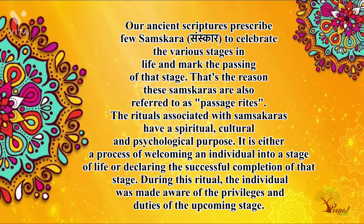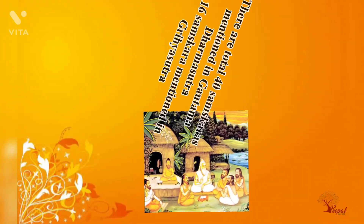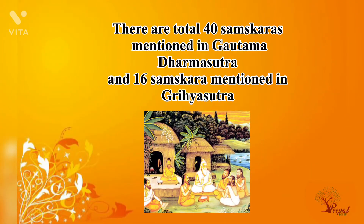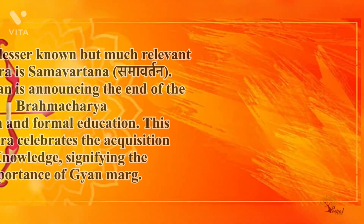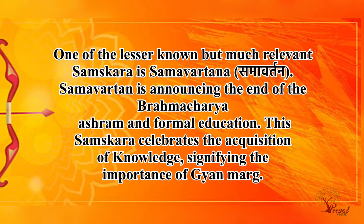There are a total of 40 sanskars mentioned in Gautam Dharvasutra and 16 sanskars mentioned in Griha Sutra. One of the lesser known but much relevant sanskars is Samavartan. Samavartan announces the end of the Brahmacharya ashram and formal education.